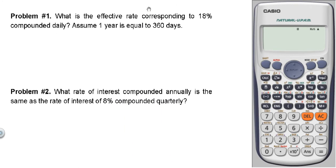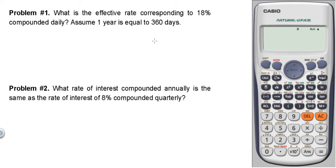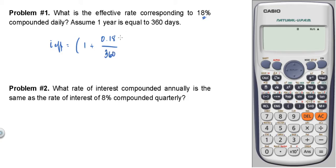Problem number one: What is the effective rate corresponding to 18% compounded daily? Assume one year equals 360 days. I effective equals 1 plus the nominal rate of 0.18 over 360 (since it is compounded daily, we use 360), raised to 360, minus 1.